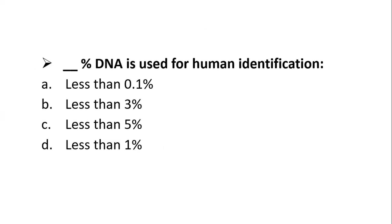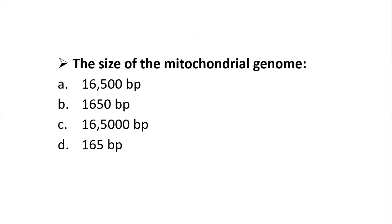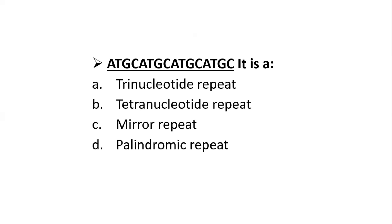Which percentage of DNA is used for human identification? The correct option is D — only less than 1% of DNA is unique among individuals and is used for human identification. The size of the mitochondrial genome is? The correct option is A — 16,500 base pairs. The next question involves identifying the type of repeat region shown. Option B is correct: it is a tetranucleotide repeat, because you can see A, T, G, C — four nucleotides repeating again and again. So tetranucleotide repeat is present here. This completes the subject-based past paper questions.